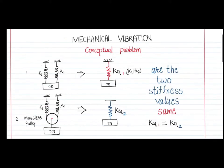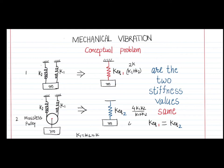Going back to the original question: the equivalent stiffness of the second system is 4*k1*k2/(k1+k2). Using these two formulas we can now comment whether the equivalent stiffness of the two systems are the same or not. We can see that directly we cannot say the two stiffnesses are the same. However, if k1 equals k2 equals k, then in the first case the equivalent stiffness is 2k. In the second formula, 4k²/(2k) also gives 2k. But for all other different values of k1 and k2, the two equivalent stiffness values will not be the same.